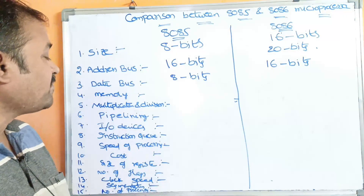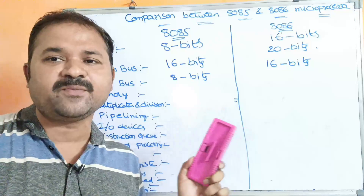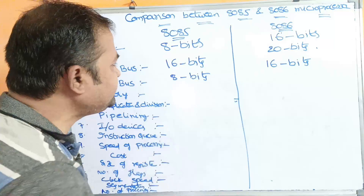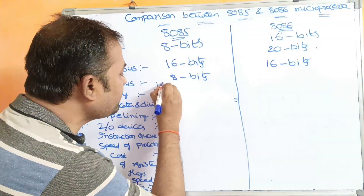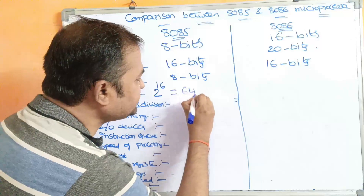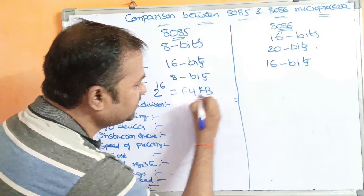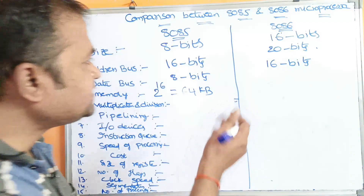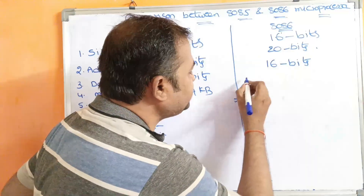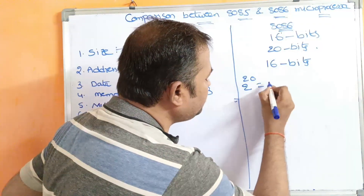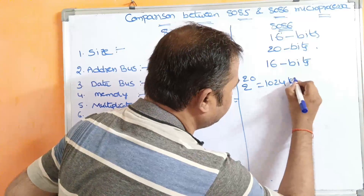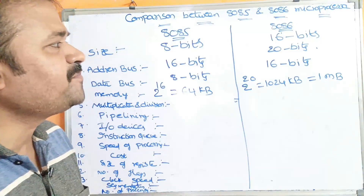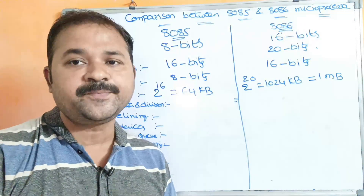The next characteristic is memory. The size of main memory depends on the address bus. For 8085, the address bus is 16 bits, so the memory size is 2^16, which equals 64 kilobytes. For 8086, the address bus is 20 bits, so 2^20 equals 1,024 kilobytes, which is 1 megabyte. So the main memory of 8086 is 1 megabyte.